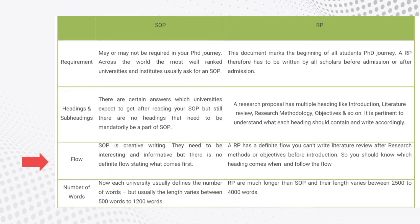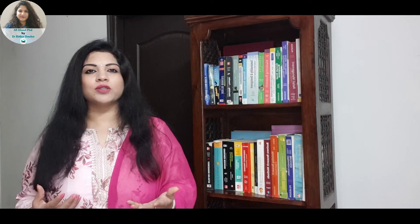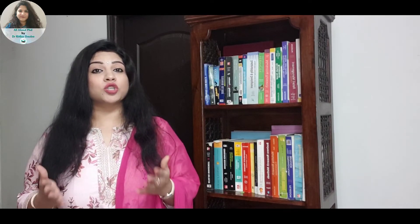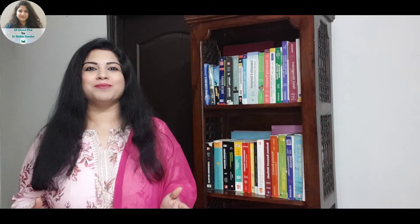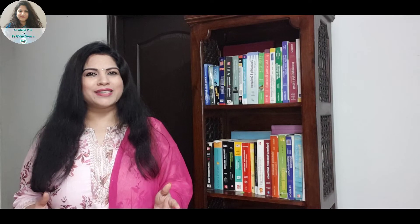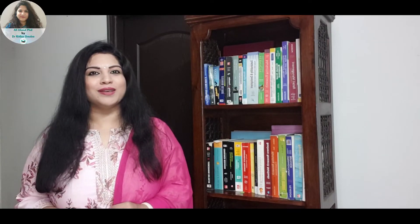The fourth characteristic is flow. An SOP does not have any defined or fixed flow. It is a creative document and it completely depends on the student how they want to start it, what they want to put in the middle, and how they want to end it. The purpose is to make this creative document short, crisp, interesting, and informative all at the same time. It might sound easy, but it is not easy to write a simple yet effective SOP.